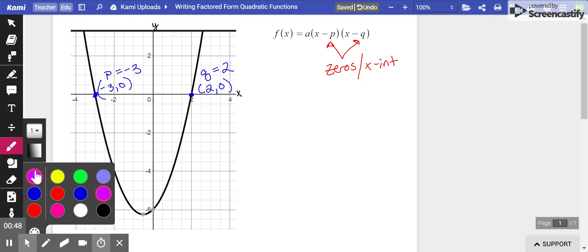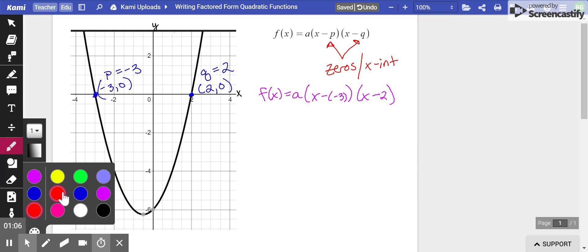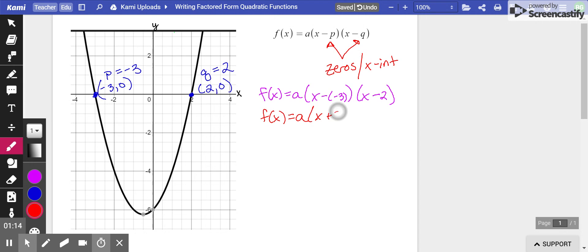So the first thing we're going to do is substitute those in for P and Q in our formula. So we get f of x equals a times x minus negative 3 times x minus 2. And then we have to simplify. So x minus negative 3, minus a negative becomes plus a positive. So we get f of x equals a times x plus 3 times x minus 2.